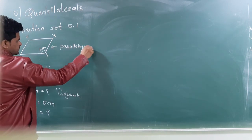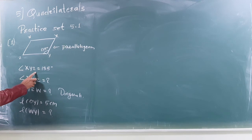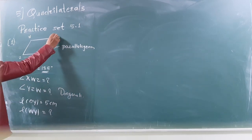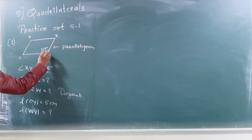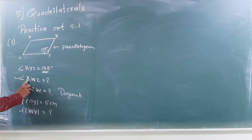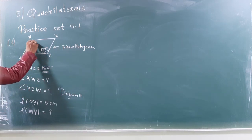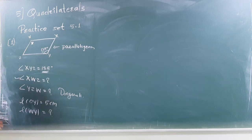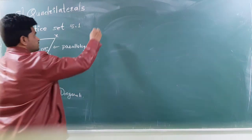In this, we have given angle XYZ is 135 degrees. This one, angle XYZ is 135 and we have to measure here angle XWZ. This angle we have to measure. So, look at here, how is the measure?